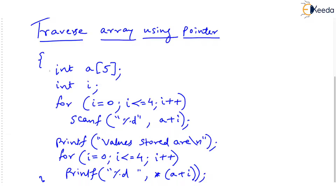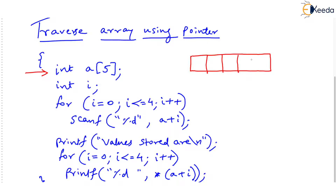I have declared one array 'a' of five locations, but I have not initialized it. In memory, this array continuously holds five elements. Maybe the begin address of the array is 100. We know that 'a' itself is the address of the array and 'a' points to the array. Also remember, 'a' is a constant pointer, so you cannot ask 'a' to point somewhere else — it will always point to the start address of the array.